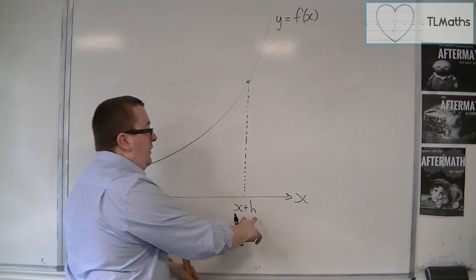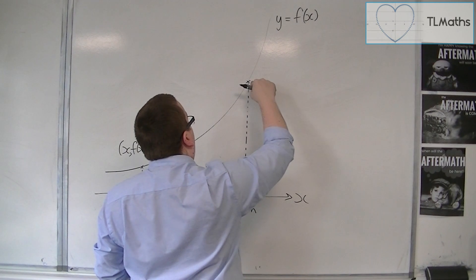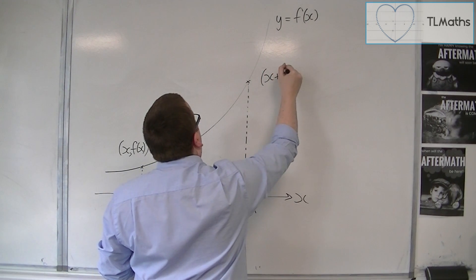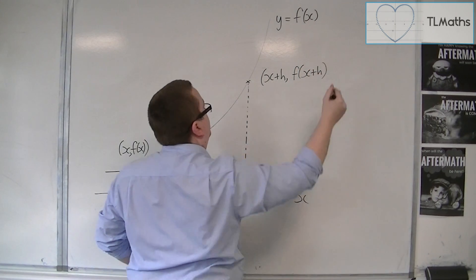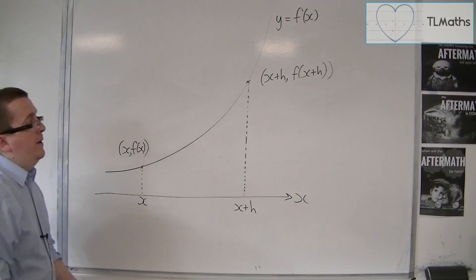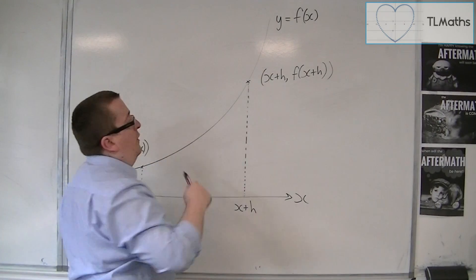So if this x-coordinate is x plus h, the coordinates of this point on the curve will be x plus h, and then f of x plus h. So if it was x, f of x here, it will be x plus h, f of x plus h there.